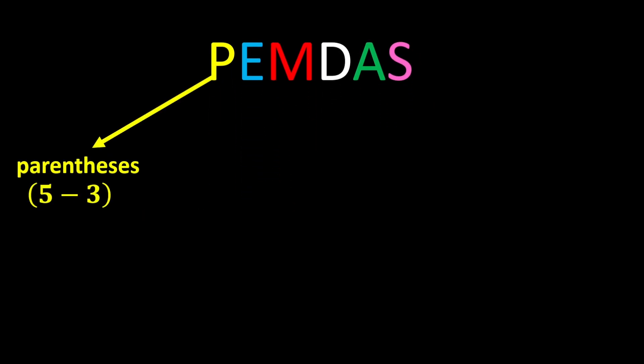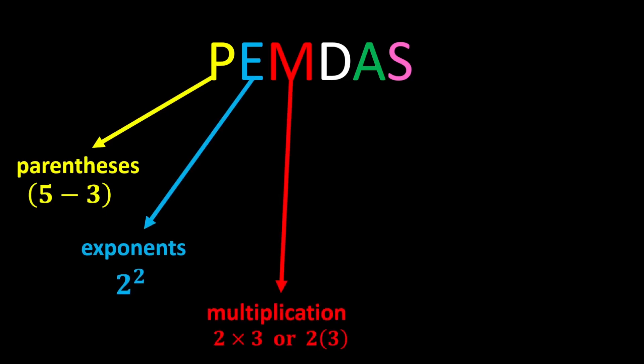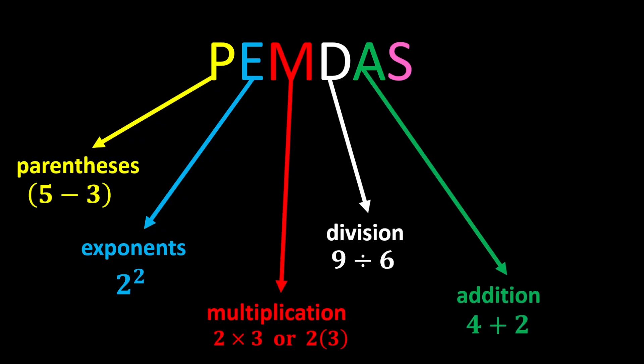P stands for parentheses, E stands for exponents, M stands for multiplication, D stands for division, A stands for addition, and S stands for subtraction. According to PEMDAS, we first calculate the parentheses, then we calculate the exponents, after the exponents we perform the multiplications and divisions, and finally we do the additions and subtractions.